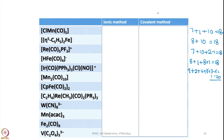For Mn2(CO)10: 14 electrons from two Mn plus 20 electrons from CO gives 34, so a metal-metal bond is needed — this is a 17-electron system per metal. Similarly, another species also needs a metal-metal bond as a 13-electron species. For an ethylene complex of rhenium with cyanate ligands: Re gives 7 electrons, ethylene gives 2, and with a 3-minus charge we add 3, giving 17 electrons.